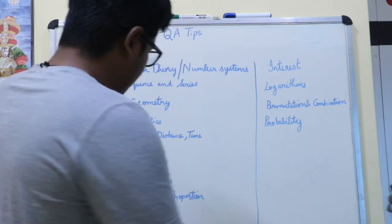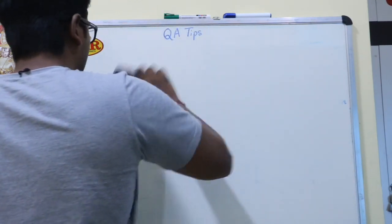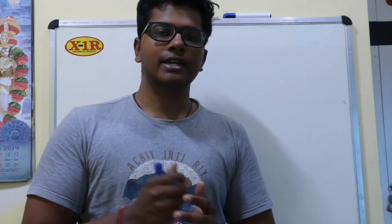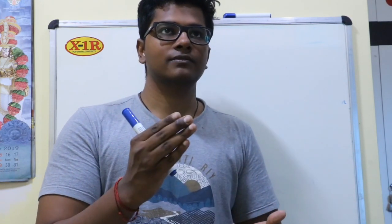I scored 98.95 percentile in the CAT 2019 quantitative aptitude section. I improved from 95.7 to 98.95 — so let me tell you how I made that jump.